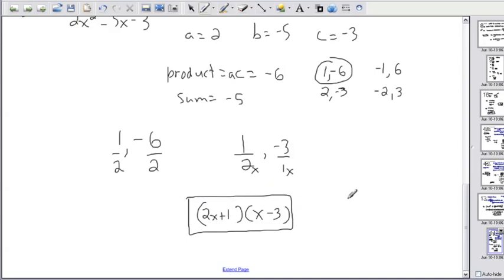And of course, we can double check if we did it right by expanding. So let's check. I'll expand a little bit faster this time. So 2x times x is going to be 2x squared. That's the first terms. Then outside is going to be minus 6x. The inside is going to be plus x. And the last is going to be minus 3. And that gives me 2x squared. I'm going to combine the minus 6x and the plus 1x. That gives you minus 5x minus 3.